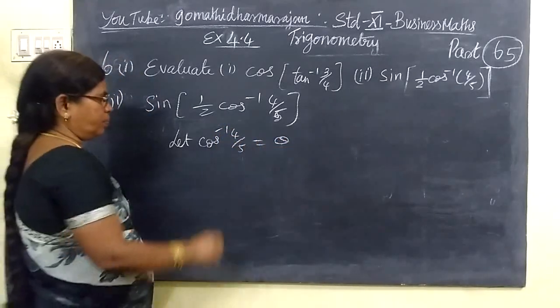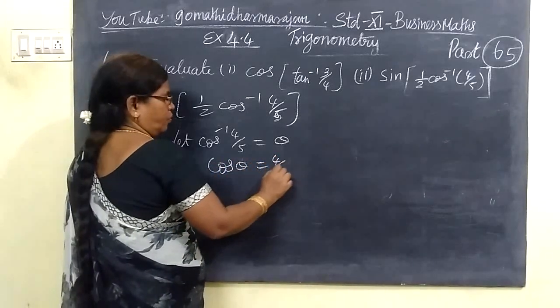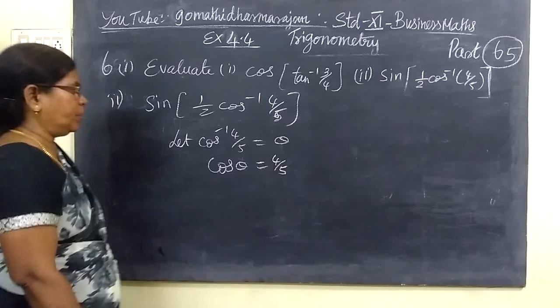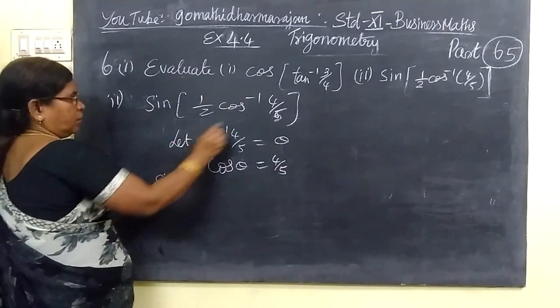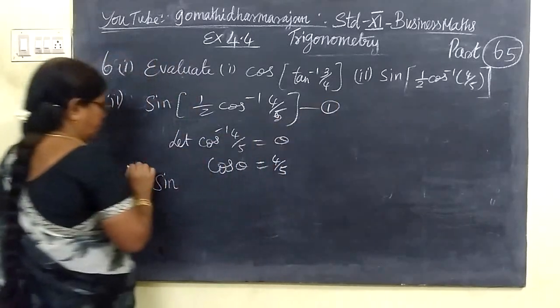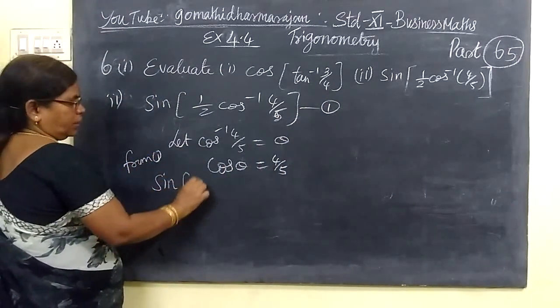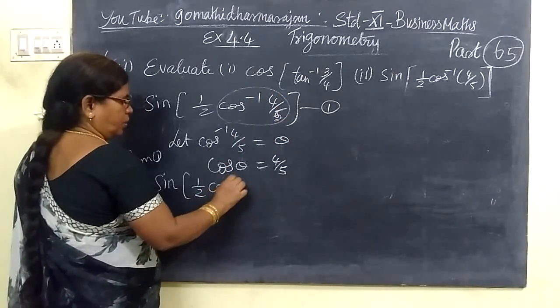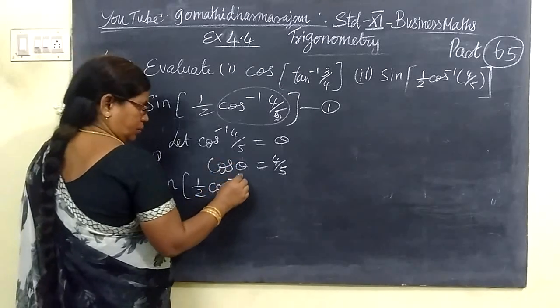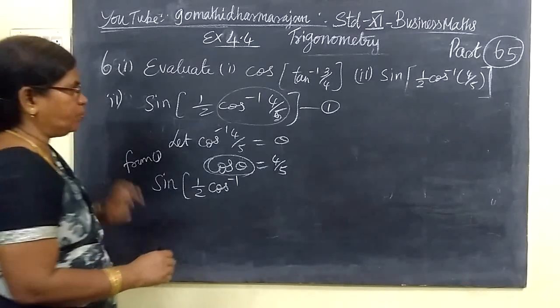Equal to some theta. Now theta - let cos inverse 4 by 5 equal to theta. From this, cos inverse 4 by 5 is theta. The 4 by 5 is the value of cos theta.